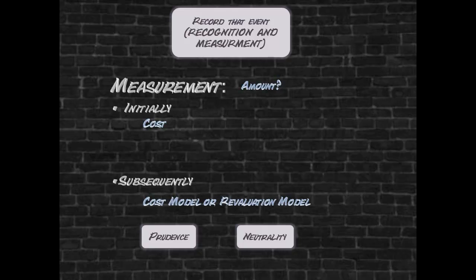Once the decision is taken to recognize a cost incurred as property, plant and equipment, initial recognition will be at cost. IAS 16 provides a choice for subsequent measurement between the cost model and the revaluation model. The cost model is still based on the prudence concept, whilst revaluation moves towards neutrality.